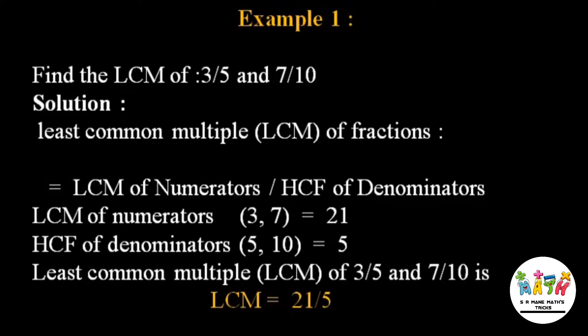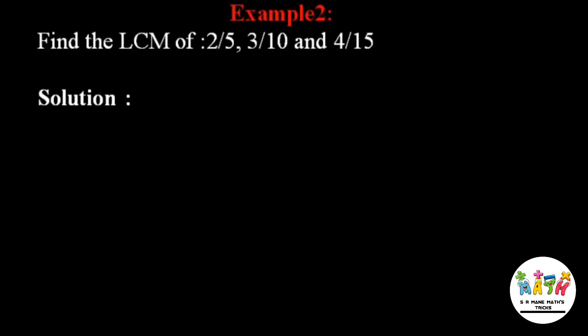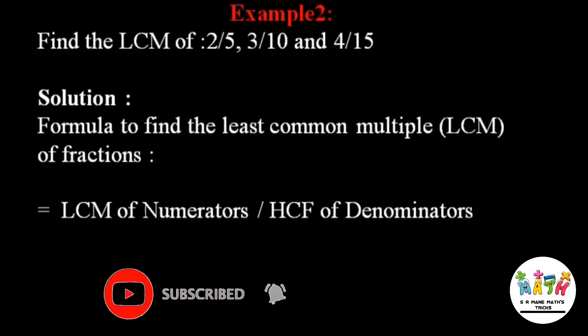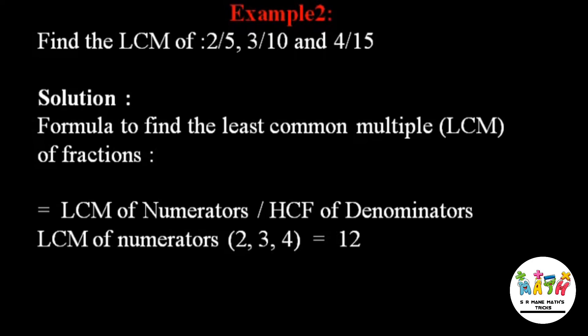Now for the second example: find the LCM of 2/5, 3/10, and 4/15. We use the same formula — LCM of the numerators divided by GCF of the denominators. The numerators are 2, 3, and 4, and the LCM of 2, 3, and 4 is 12.